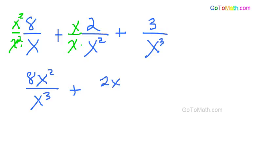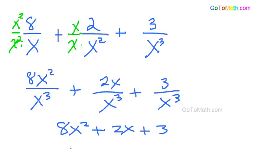So as you can see here, now we have a common denominator and we just add the numerators. So 8x squared plus 2x plus 3 and it's all over x cubed.